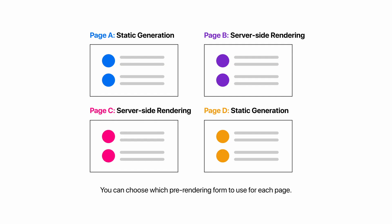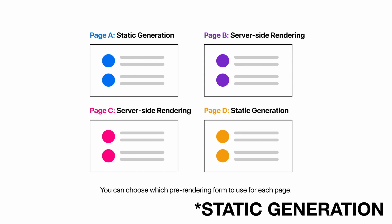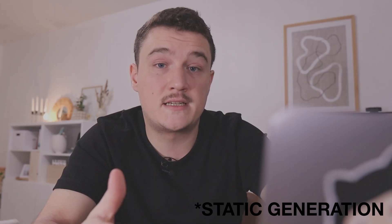One thing to keep in mind is that in development mode — when you are using 'yarn dev' — every page is pre-rendered on each request, even pages that use static generation. The cool part is that you are not tied to just one pre-rendering method in your entire Next.js application. You can choose which pre-rendering method to use per page, creating a hybrid Next.js app that uses static generation on some pages and server-side rendering on others.